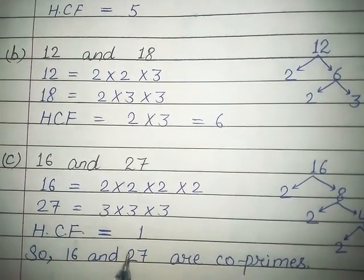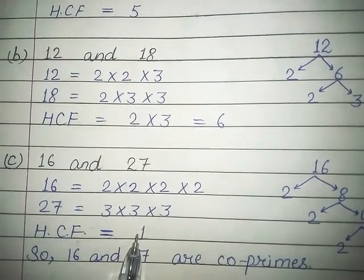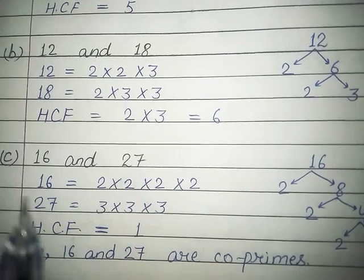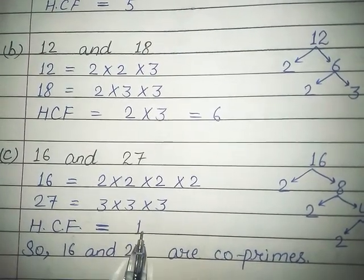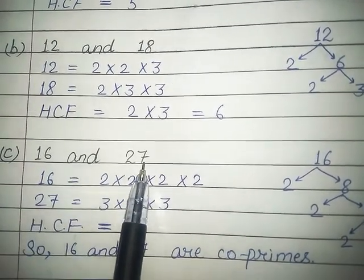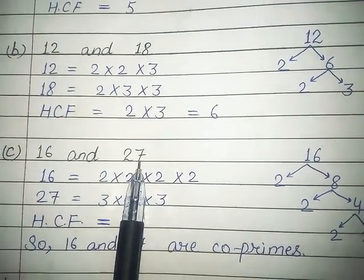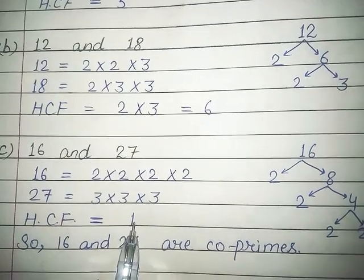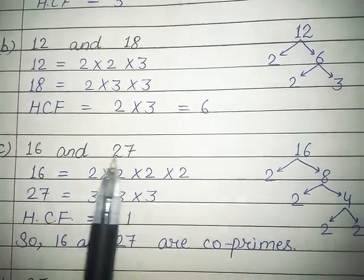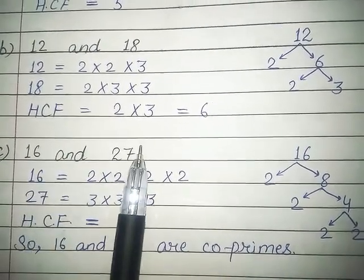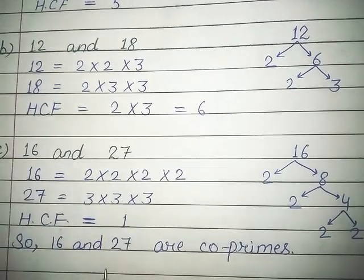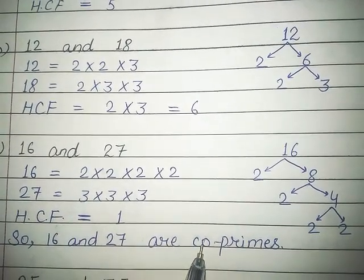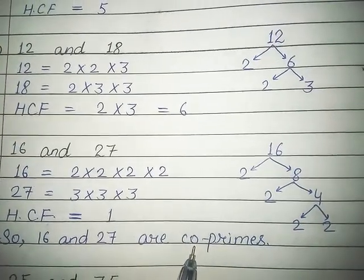So what is the common factor? It is 1, because we have studied in the previous exercise that 1 is a factor of every number. So 1 will be the common factor of 16 and 27. Numbers whose HCF is only 1 are called co-primes. So 16 and 27 are co-primes. Clear, students?